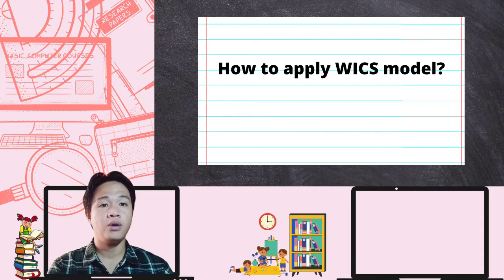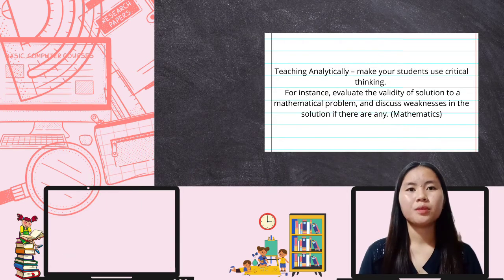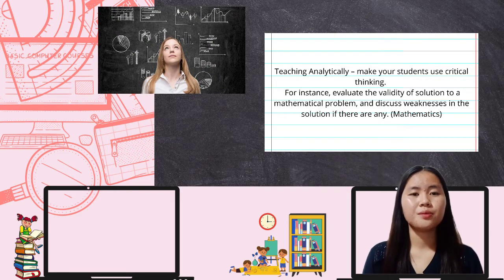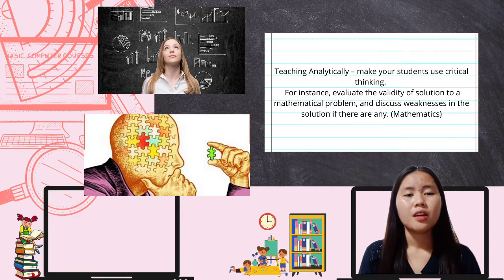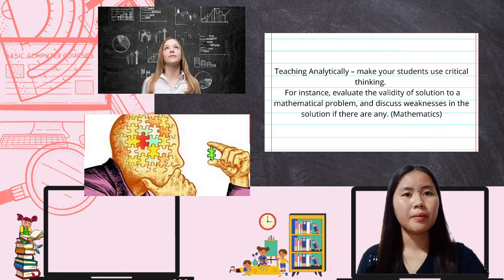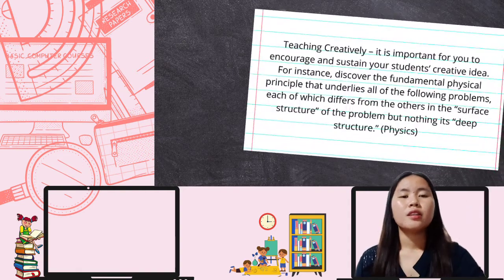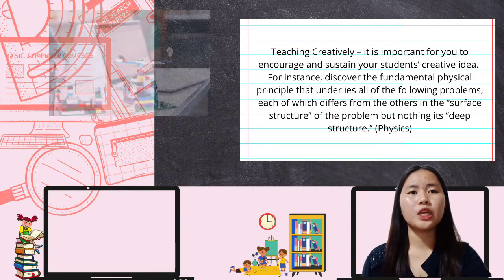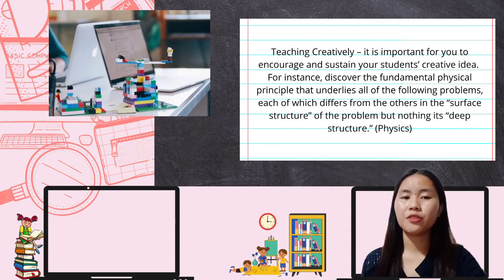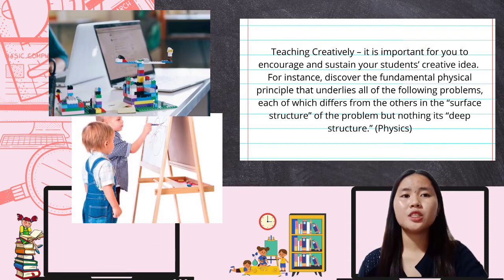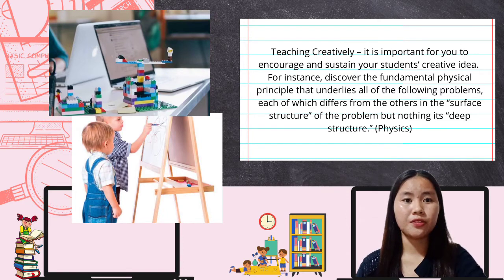To apply the WICS model: number one, when teaching analytically, have students use their critical thinking skills. For instance, in mathematics, evaluate the validity of a solution to a mathematical problem and discuss any weaknesses. Number two, when teaching creatively, encourage and sustain your students' creative ideas. For instance, in physics, let students discover the fundamental physical principle that underlies a set of problems that differ in surface structure but not in deep structure.